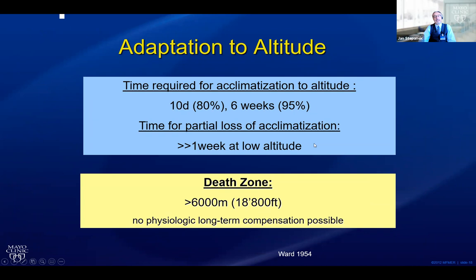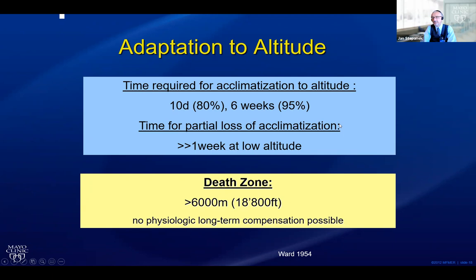When thinking about adaptation to altitude, there are rules of thumb. In order to acclimatize to a given altitude, 80% is accomplished within 10 days — basically perfectly adapting. Within six weeks you accomplish 95% at a given altitude. You can partially lose acclimatization if you spend more than a week at lower elevation. So you can be perfectly acclimatized at 14,000 feet, spend a week at sea level, go back, and experience mountain sickness.